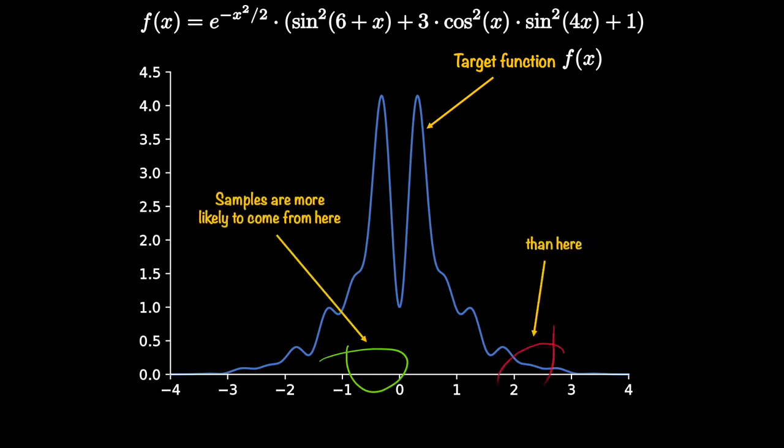When I say follow this distribution, it means that you would get these samples in accordance with their chances of occurrence. For example, for this target function, you can easily spot that we should gather more samples from the area marked as green in comparison to the area marked as red.